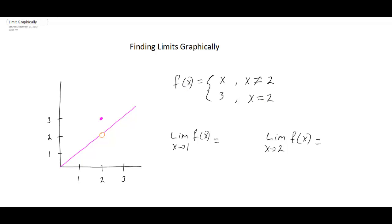recall that for this function, if you wanted to find f of 4, well, the 4 does not equal 2, so we would simply plug the 4 into the top part of the function. Therefore, f of 4 equals 4. And on the other side, if we said what is f of 1, once again, 1 does not equal 2, so we plug the 1 in for x, so f of 1 equals 1.